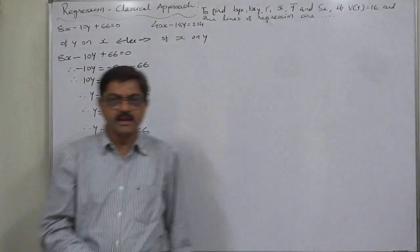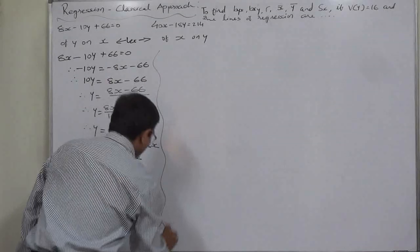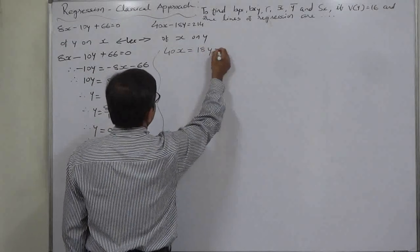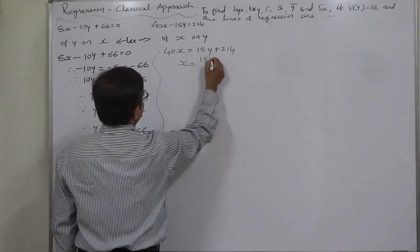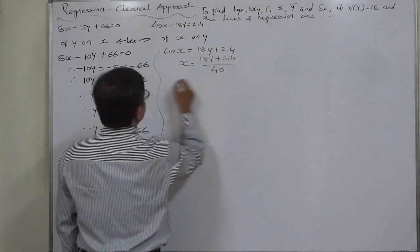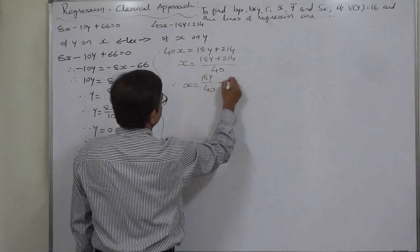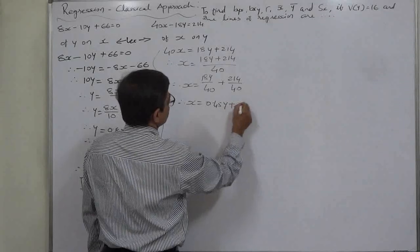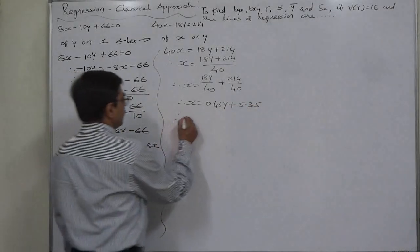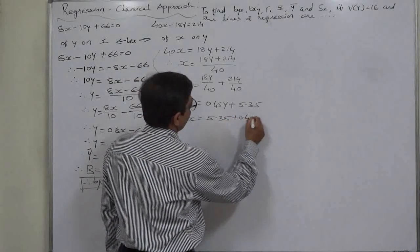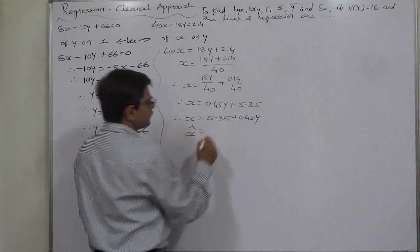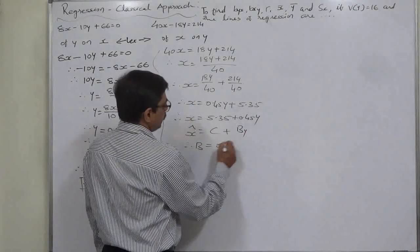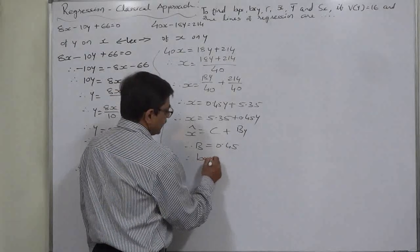The second equation is of x on y, so we make x the subject of the formula. x equals (18y + 214) / 40, therefore x equals 18y/40 + 214/40, which gives x equals 0.45y + 5.35. Comparing with the standard form x = c + b_xy·y, we can say that b_xy is 0.45.